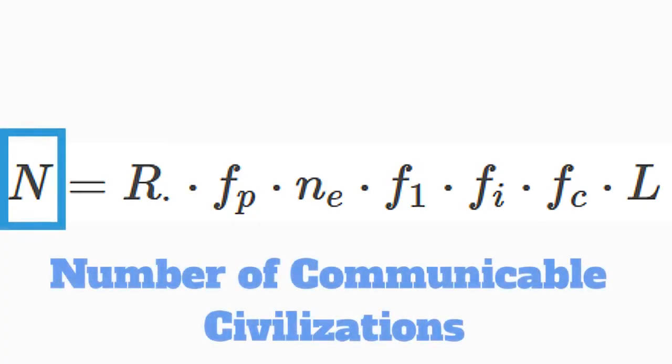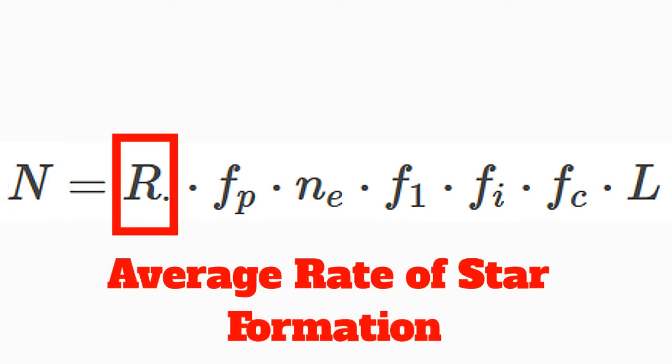Now, onto the actual equation. The Drake Equation is used to find an estimate of the number of civilizations in our galaxy in which contact is possible. This is represented by the variable N. Onto the next variables, the R with the dot is the mean, or average, rate of star formation in our galaxy, measured in years.